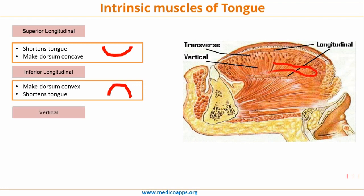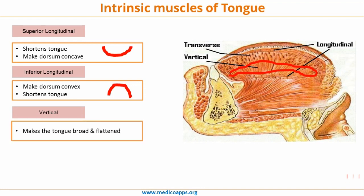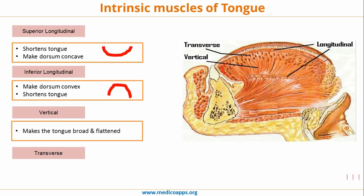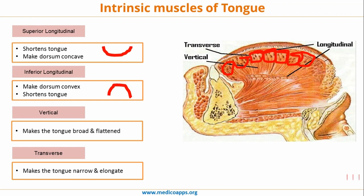The next set is the vertical intrinsic muscles. Since they run vertically, the moment they contract they will make the tongue broad and flattened — reducing the height of the tongue. Next, we have the transverse muscle. The transverse intrinsic muscle, once it contracts, will make the tongue narrow and elongated. So vertical and transverse have opposite functions: vertical makes the tongue broad and flattened, whereas transverse makes the tongue narrow and elongated.